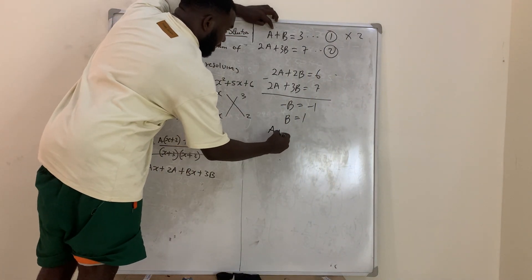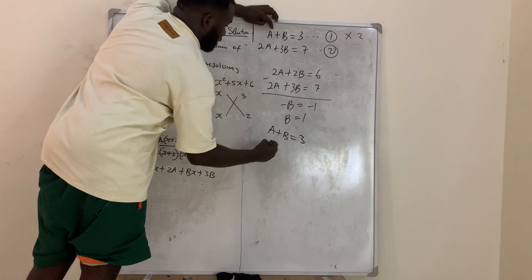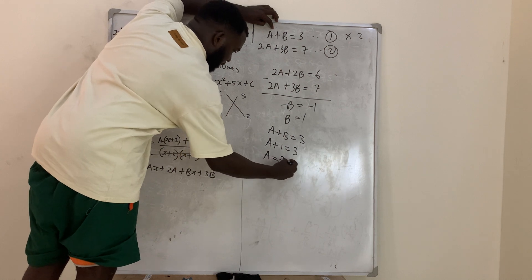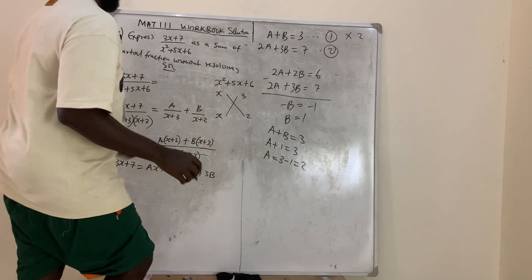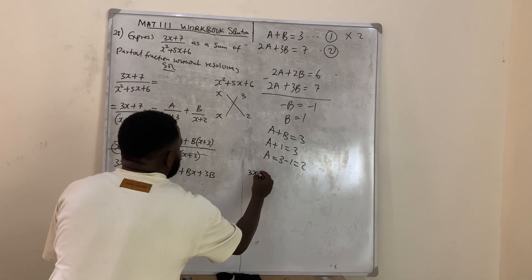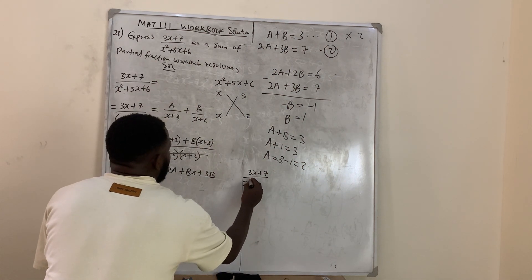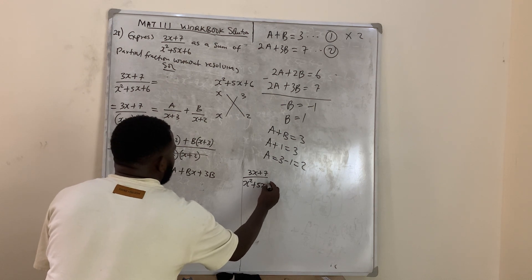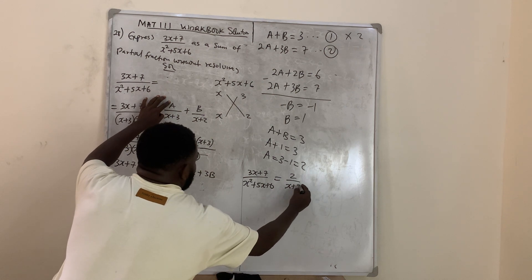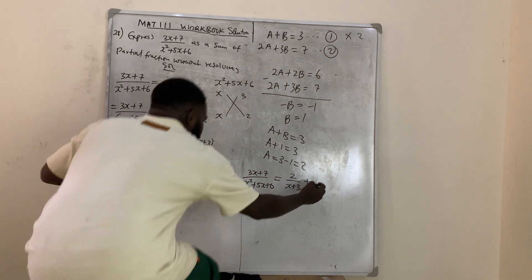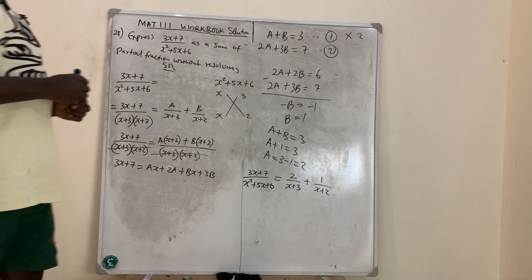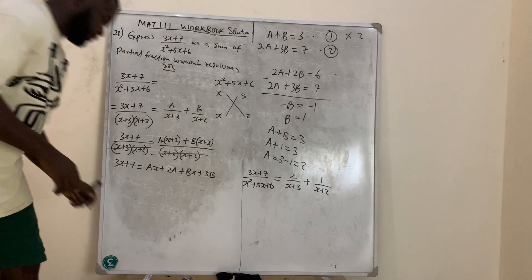Come back and substitute. So (3x + 7) over (x² + 5x + 6) equals 2 over (x + 3) plus 1 over (x + 2). That is the answer for partial fractions on question 28.